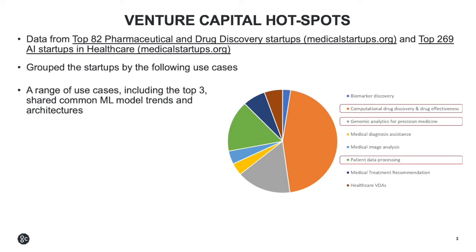Ultimately, our job as we see it at Graphcore is to do what we can to remove those impediments for those AI teams. Looking at the data, it's clear that computational drug discovery is a hotspot, and that's not surprising given the significant opportunity for AI to dramatically alter how new leads for drugs are developed. It's a bit misleading to see it as a homogeneous use case space because there is a wide range of sub-areas and sub-use cases within this, involving dry lab versus wet lab, target discovery and validation, protein-protein interaction, ligand-protein interaction, protein-shape modeling, drug repurposing, etc. Another large and related area is analytics for genomics, and another is patient data processing.